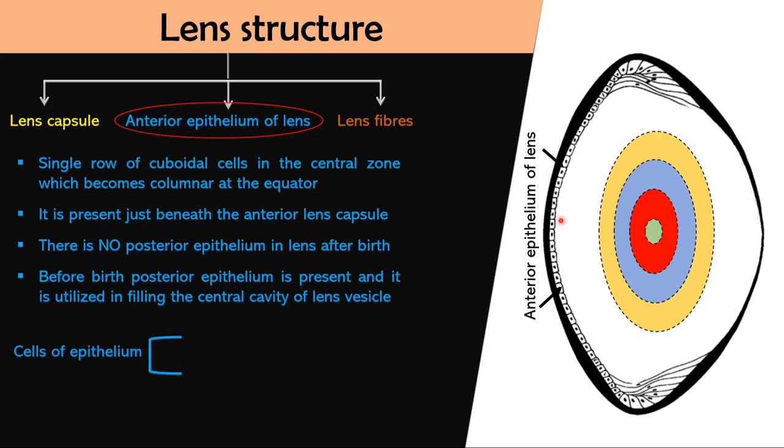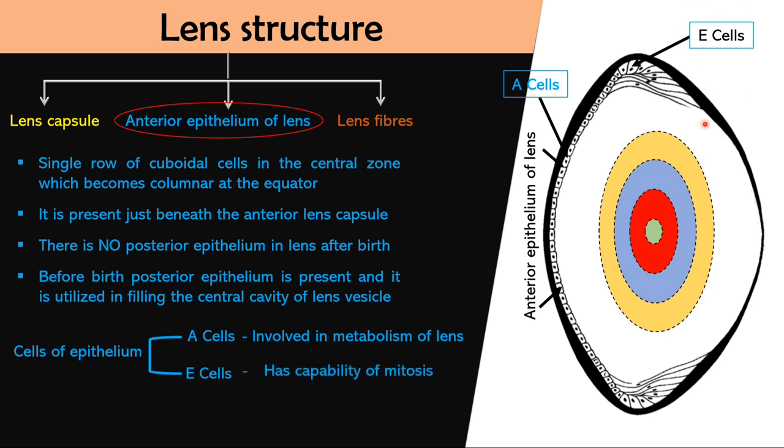Cells of epithelium are divided into two categories: A cells present anteriorly and E cells present at equator. A cells are involved in metabolism of lens, and E cells which have capability of mitosis due to which these cells actively divide to form new cells which migrate posteriorly to become lens fibers and this process continues throughout life. The part of eye which grows or continues to grow throughout life is lens.